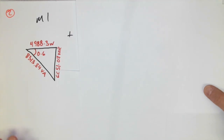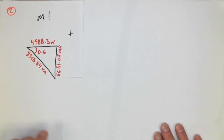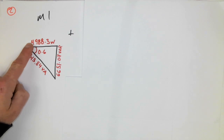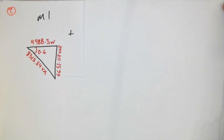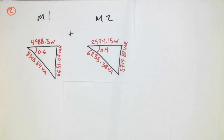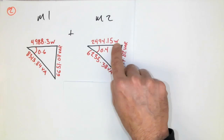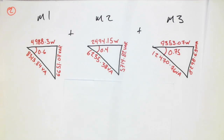Here is our first power triangle for motor one — we have 83.13 VA. I calculated that first, then used the power factor to get my watts and Pythagoras to get my VARs. For the second motor, same thing: I calculated the VA first, used the power factor to get the watts, and calculated with Pythagoras my VARs. And finally, the last one — it's a pattern; we're doing the same thing every single time.